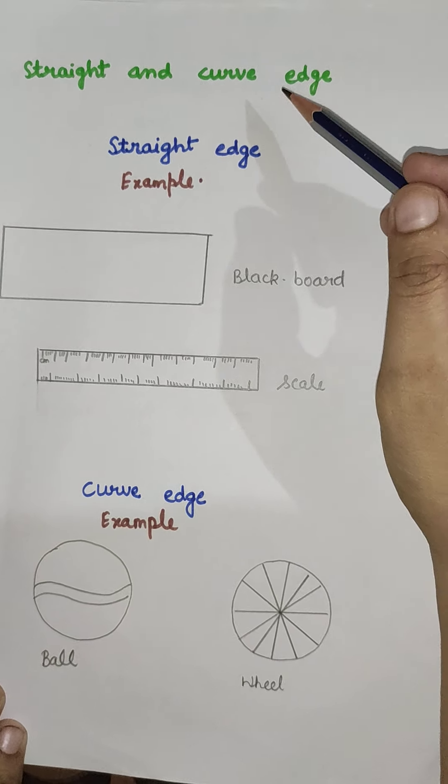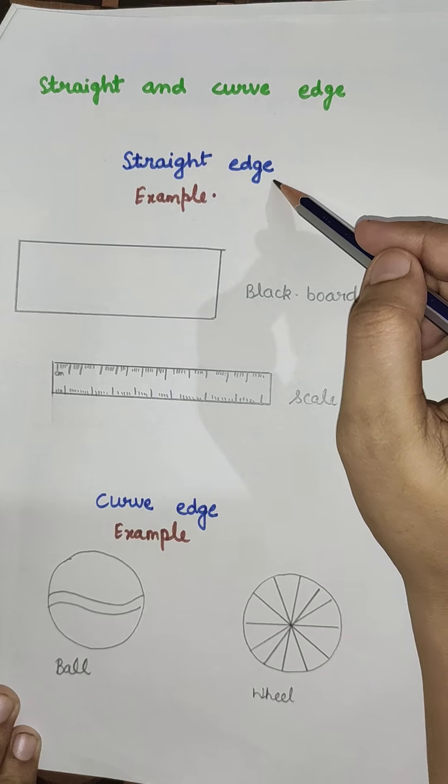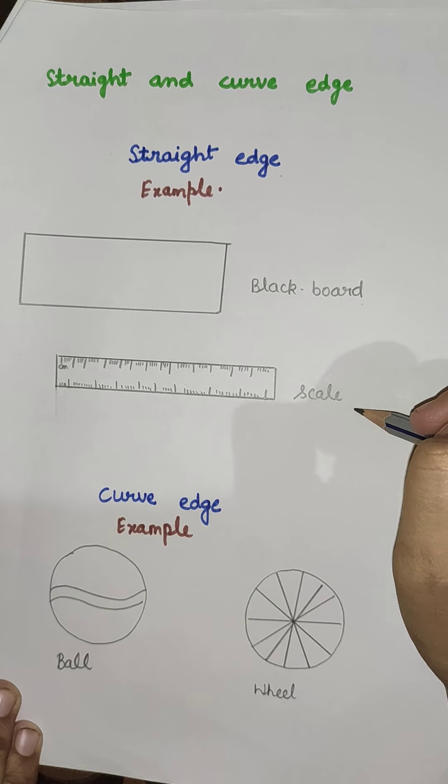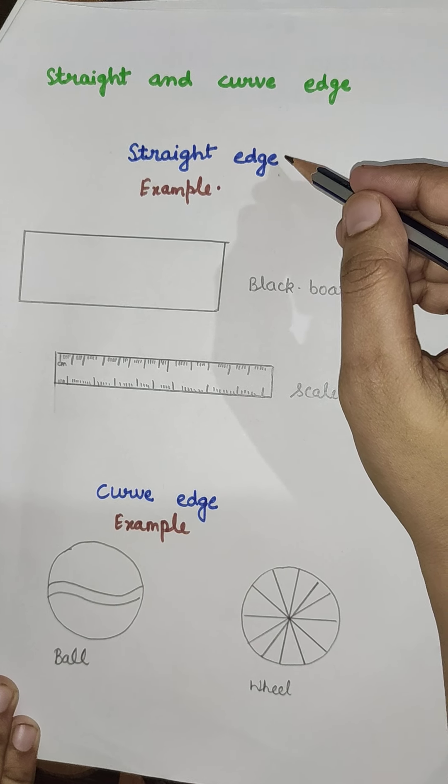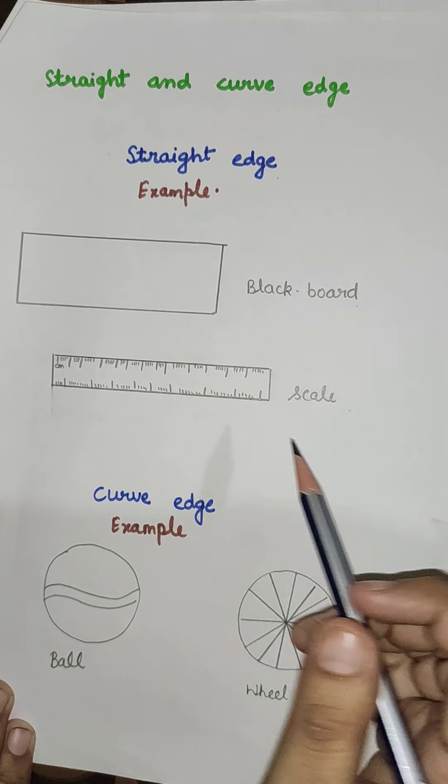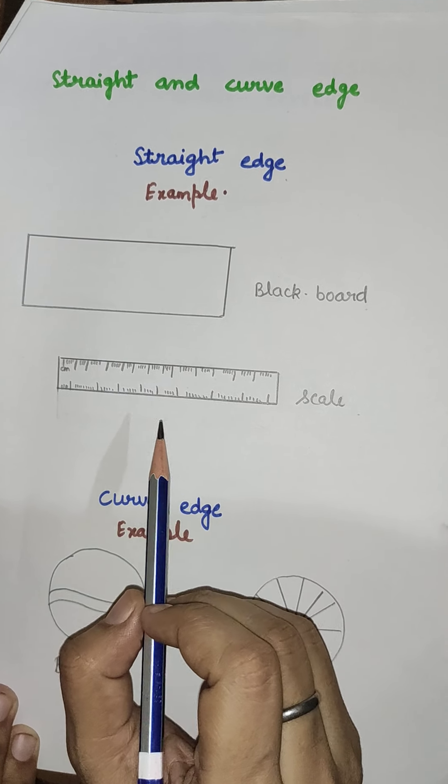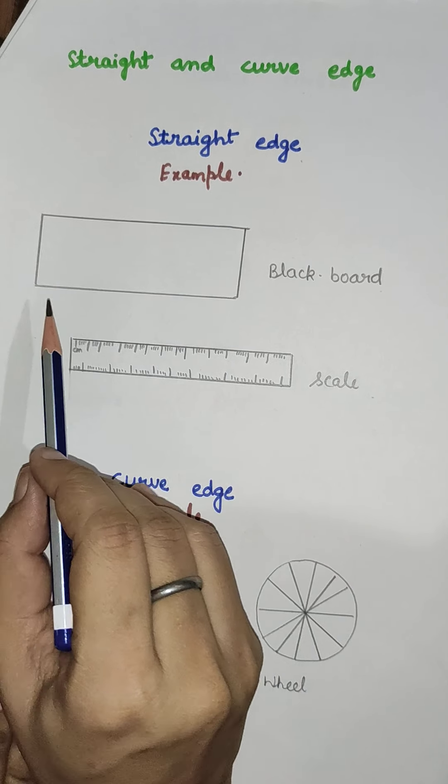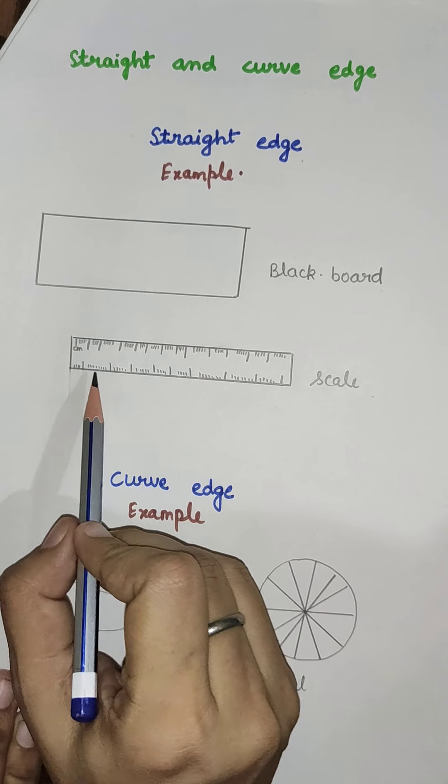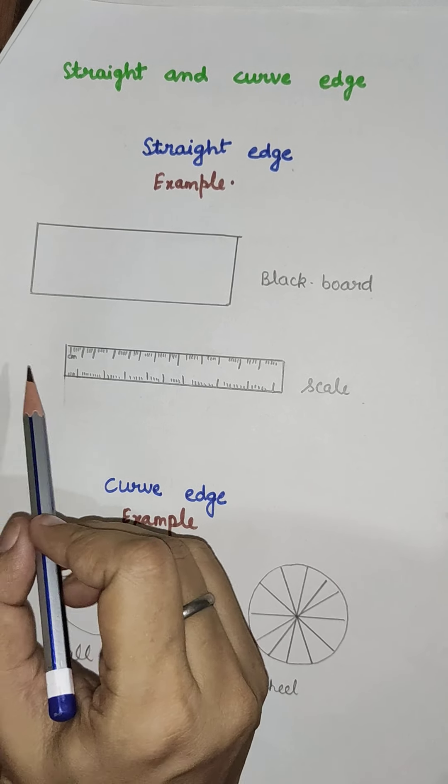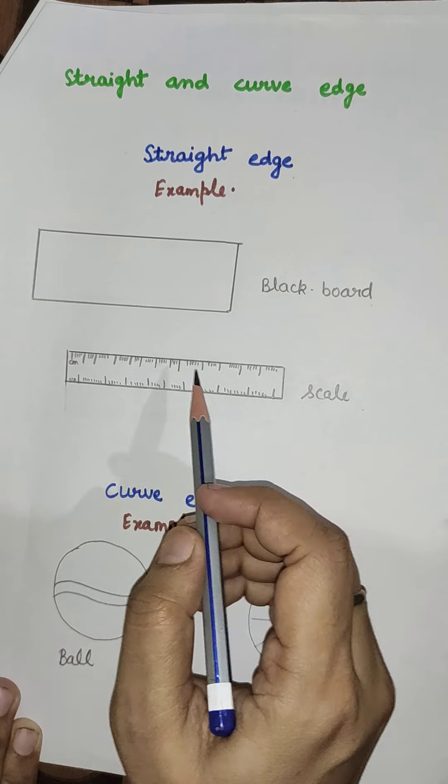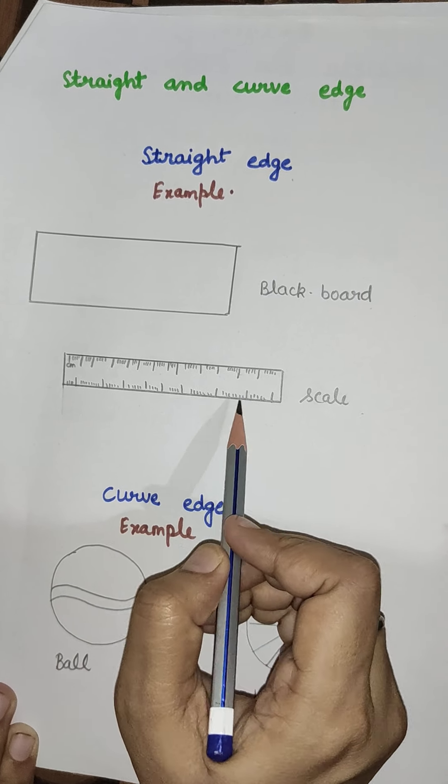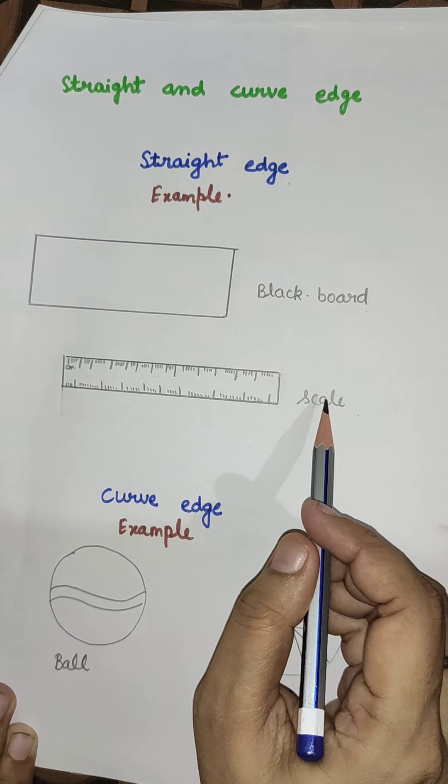Now, what is a straight edge? Examples are blackboard and scale. A straight edge is a tool used for drawing lines or checking their straightness. If it has equally spaced markings along its length, you can see the scale or ruler. It is actually called the ruler.